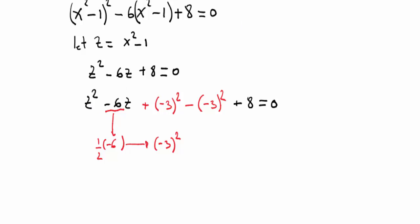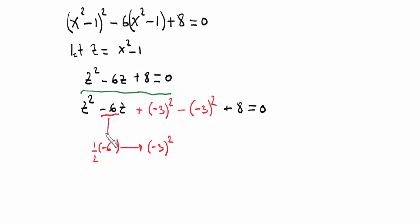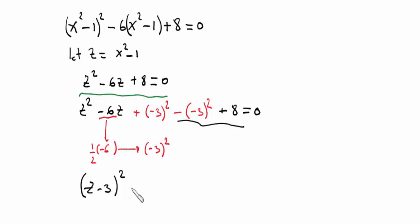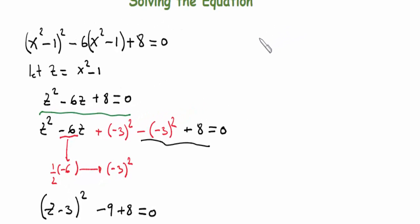The first part is a perfect square. We can write it as (z minus 3) squared. The remaining terms are minus 9 plus 8, which gives minus 1. So we have (z minus 3) squared minus 1 equals zero.